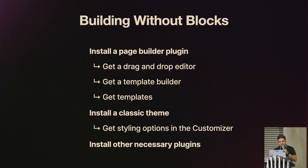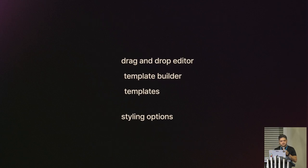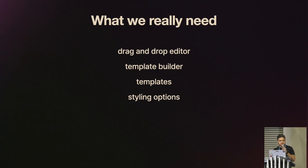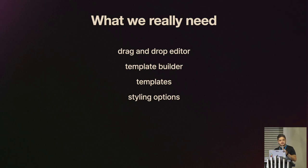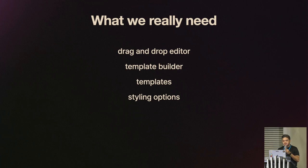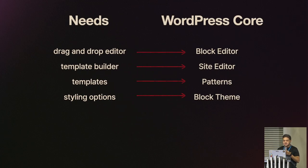Why do we go through this process? We need these four things: a drag-and-drop editor, a template builder, templates, and styling options. We need a drag-and-drop editor to edit content visually, a template builder to edit headers, footers, sidebars, and archive pages, templates to make our lives easier, and styling options so we can change things globally. Now with the advent of blocks, WordPress core fulfills all of those. The drag-and-drop editor is now the block editor, the template builder is now the site editor, templates are now patterns, and styling options come from block themes.